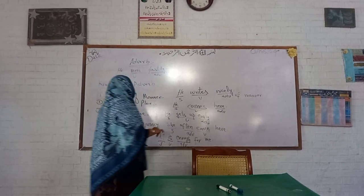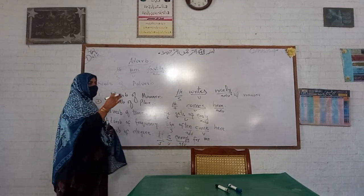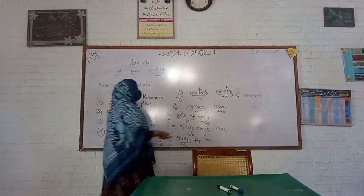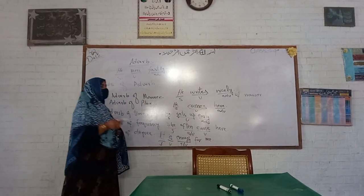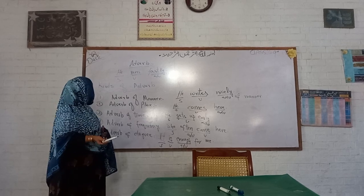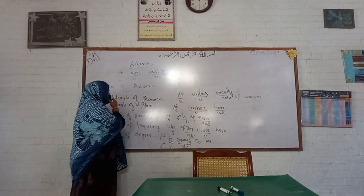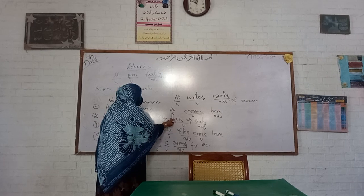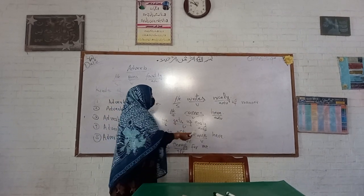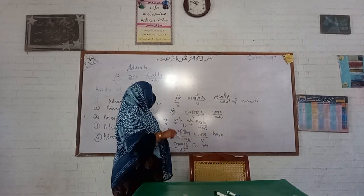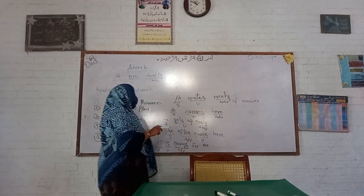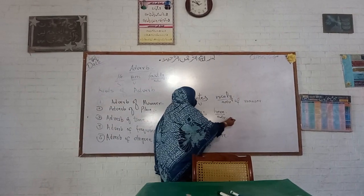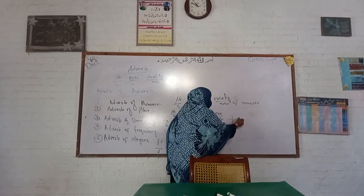What about adverb of place? Words like 'here' and 'there' are examples. When we mention the name of a particular place, it performs the role of adverb of place. For example, 'He comes here' — 'he' is the subject, 'comes' is the verb, and 'here' is the adverb of place.